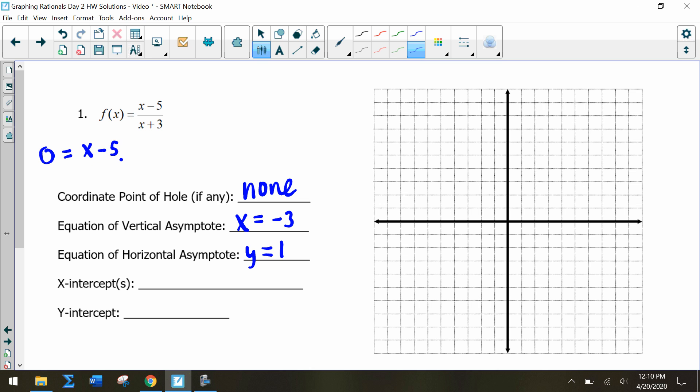If we notice, when we multiply by (x + 3) on both sides, we just get 0 = x - 5. So we have an x-intercept at (5, 0) when we solve.